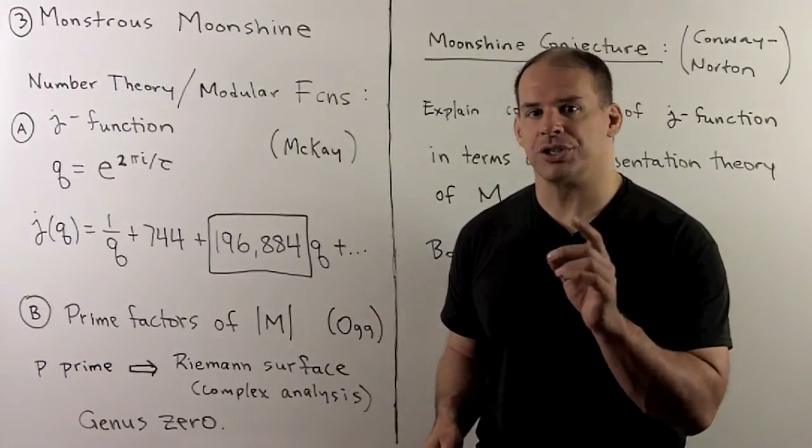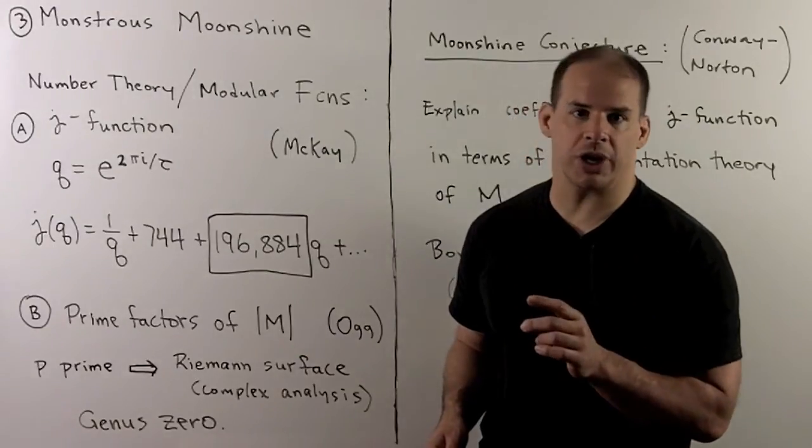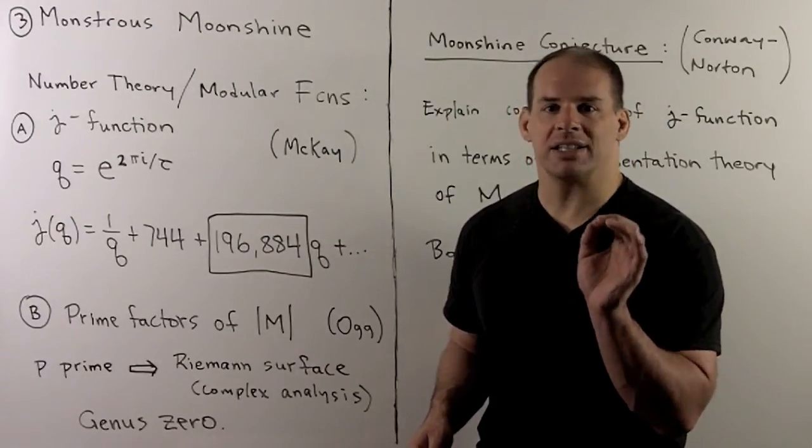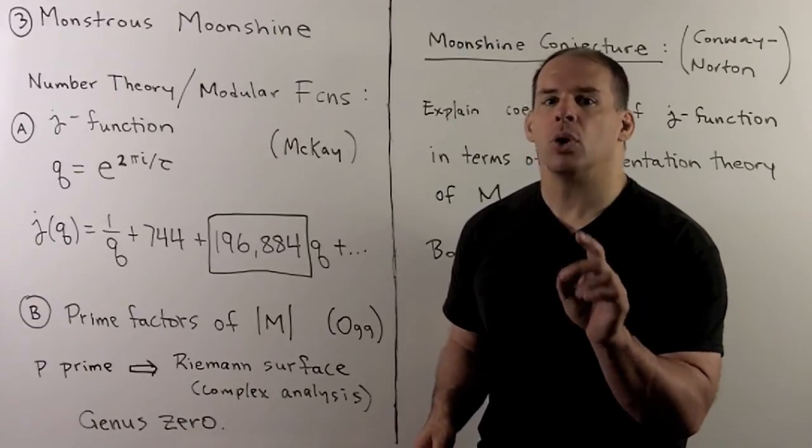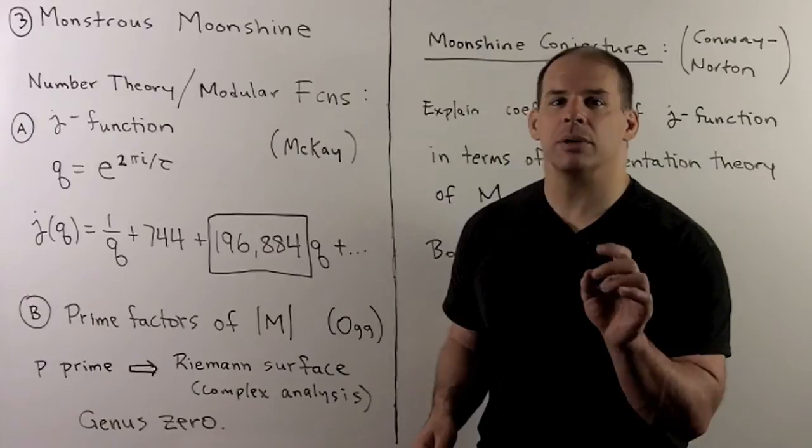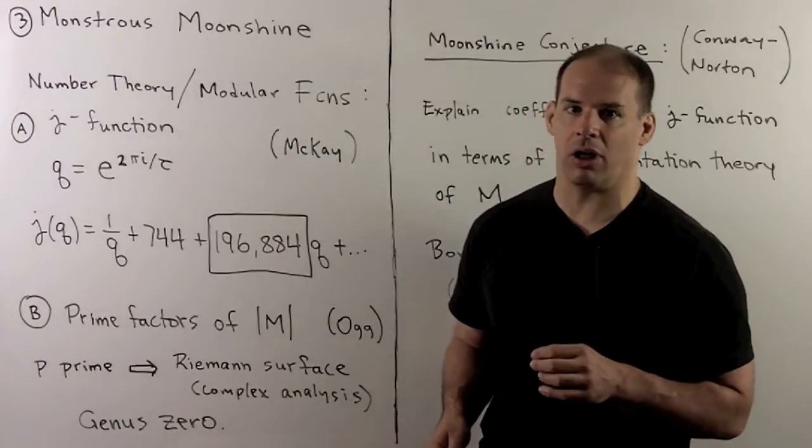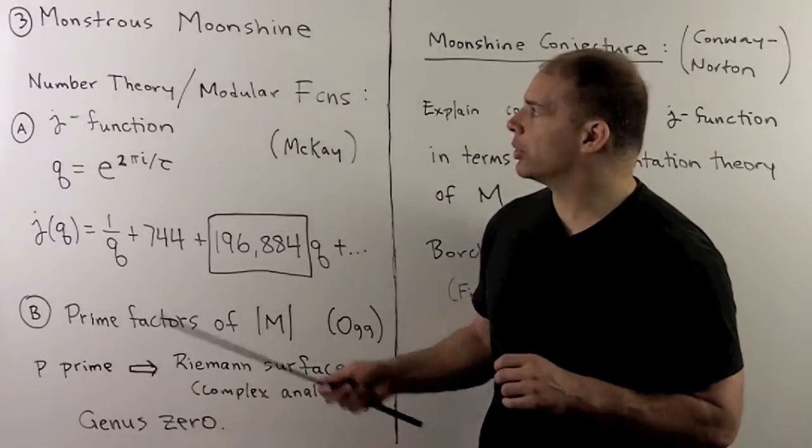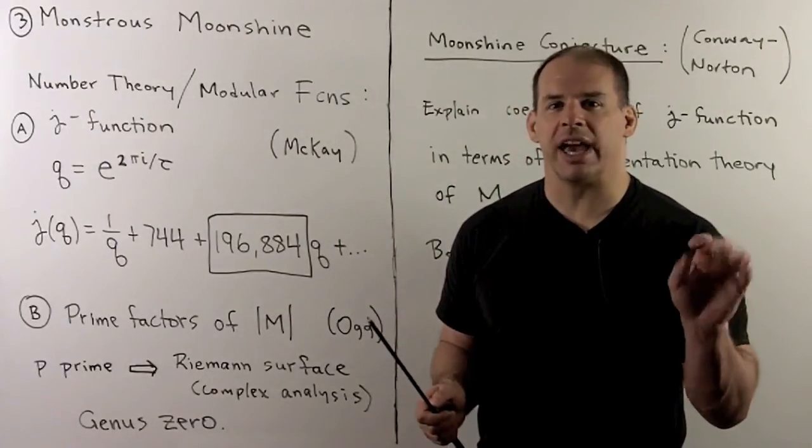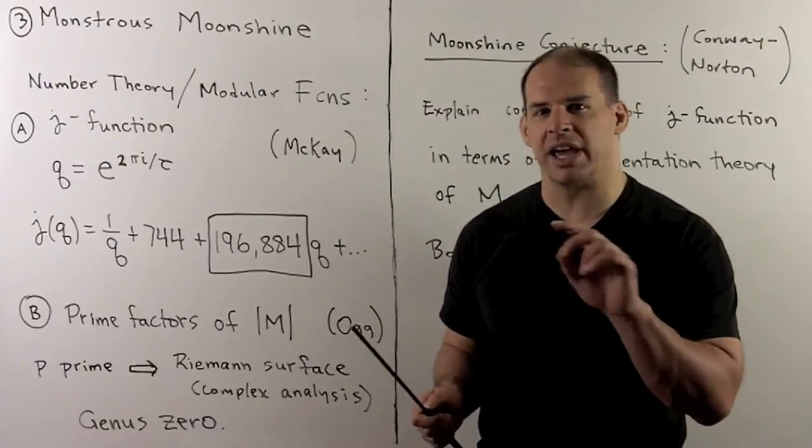For the interesting story, this goes by the name of monstrous moonshine. Why moonshine? In England, moonshine is slang for either a crazy idea or something that's shadowy or illusory. Of course, in the States, moonshine is hard illegal alcohol. So both of these are supposed to suggest that there's some really far reaching guesses going on, but with no substantiation yet.